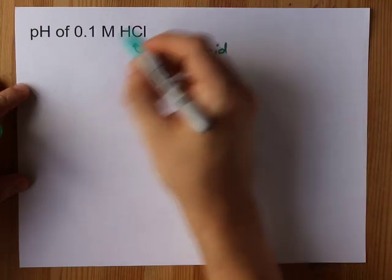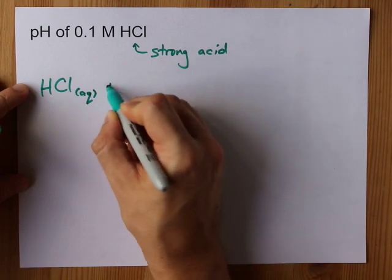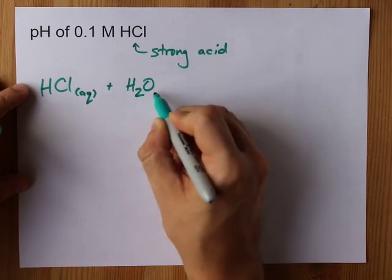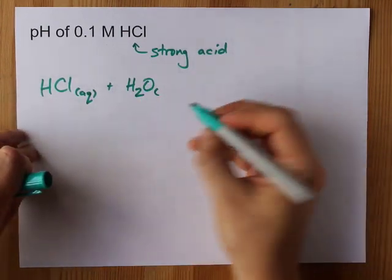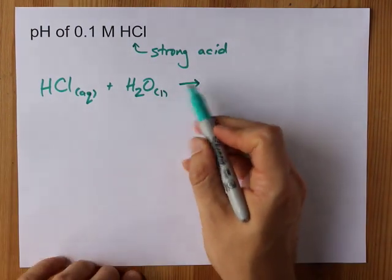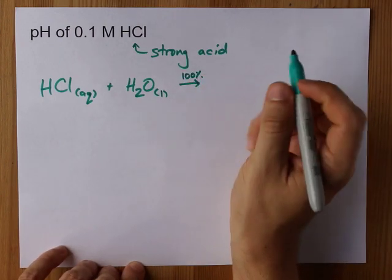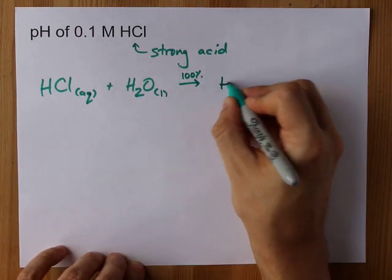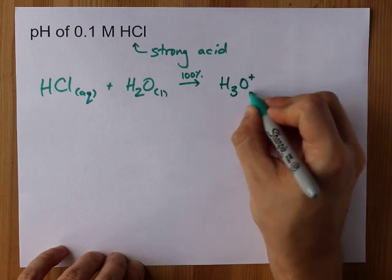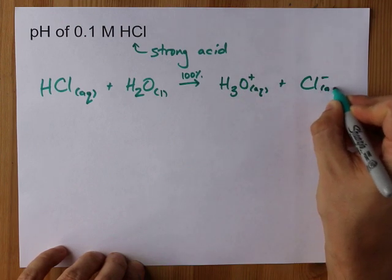which means that every single HCl that dissolves into water gives you the H+ or the proton or the hydronium that you expect it to. I'm not even going to draw an equilibrium arrow here. It is a 100% yield. HCl in water gives you H3O+ dissolved and the chloride conjugate base.